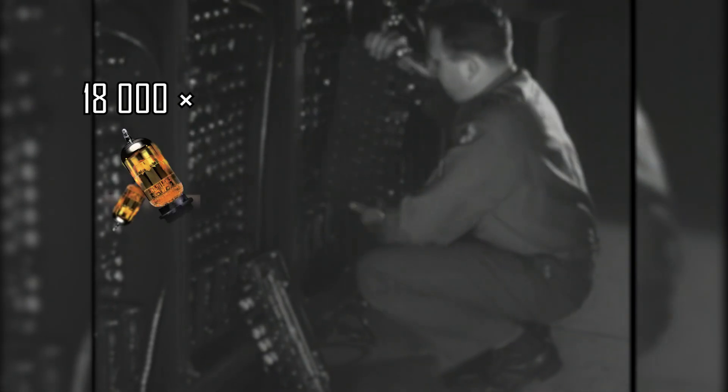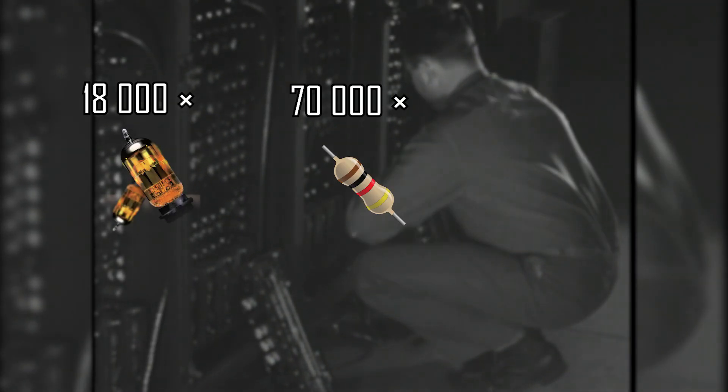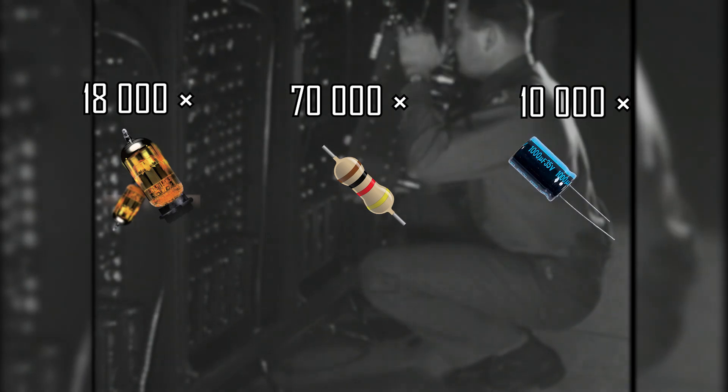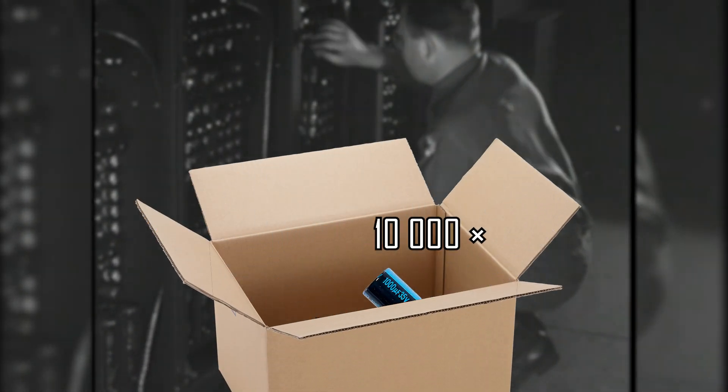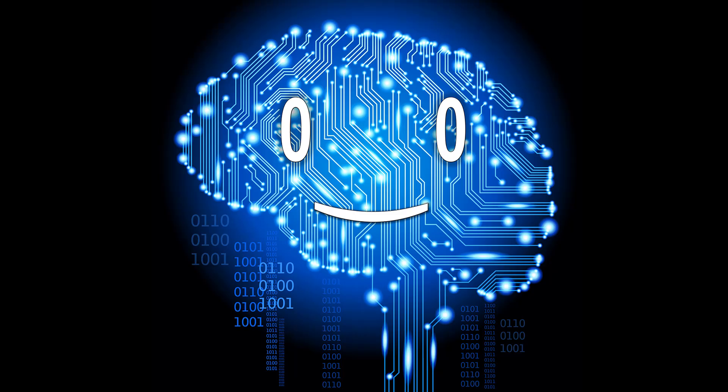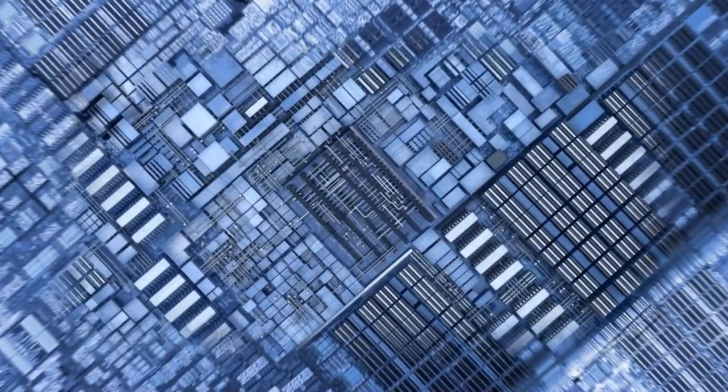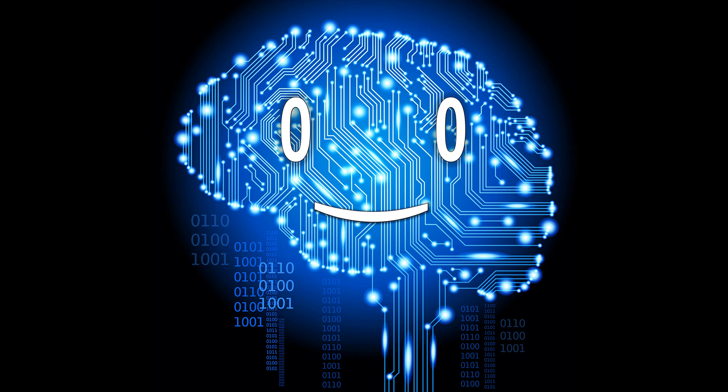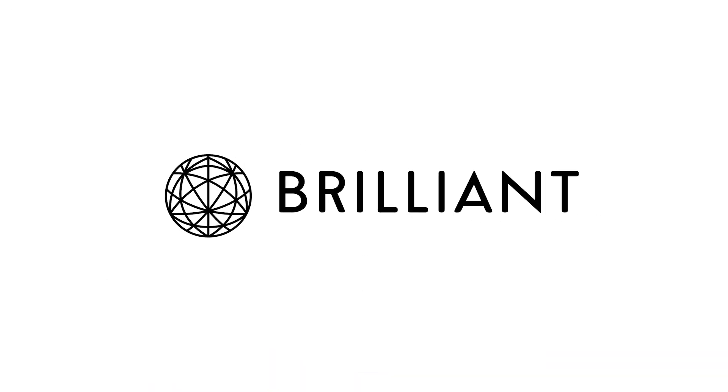And all it needed was 18,000 vacuum tubes, 70,000 resistors, and 10,000 capacitors put together into a box the size of a tennis court. Today, all such calculations would be performed on the scale of nanometers, so let's discuss how we got this far. Thanks to Brilliant for sponsoring this video.